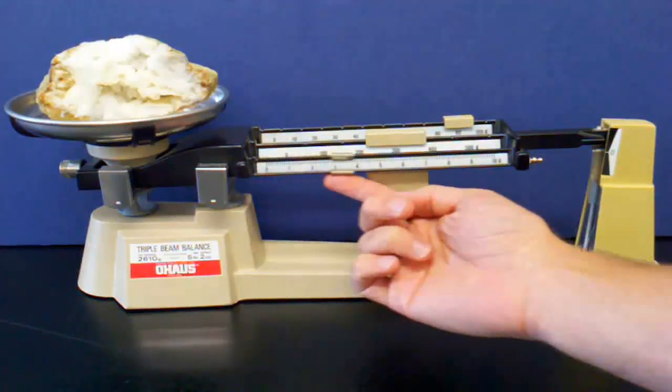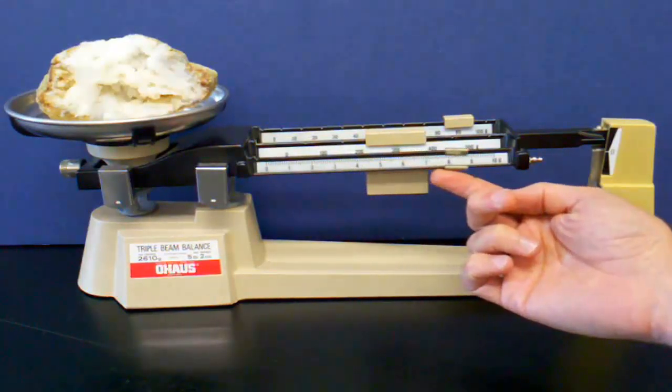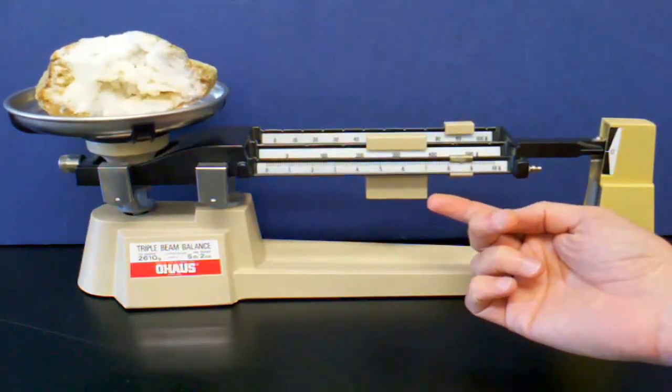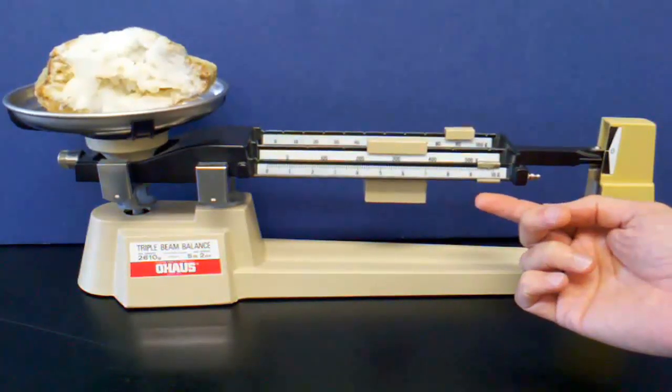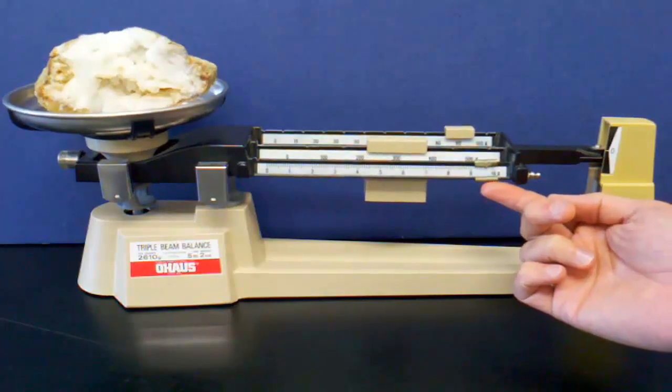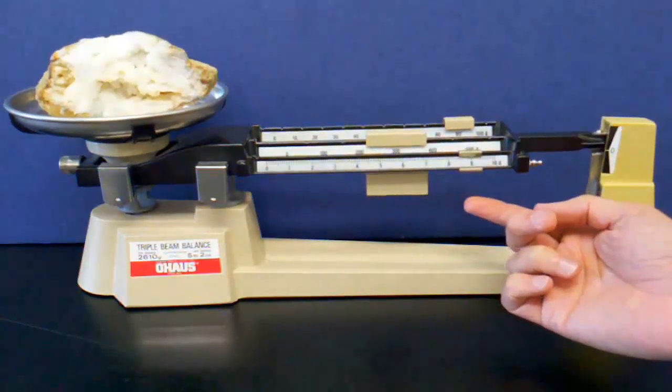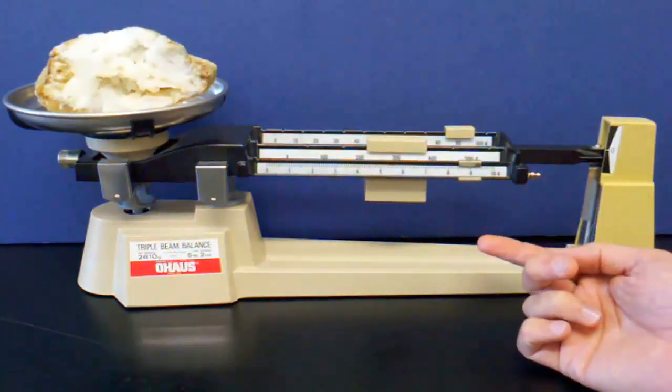Lastly, I'll do the same with the 1-gram slide. This is very delicate, and I slide it carefully along the rail. I may need to adjust it back and forth until the balance will point to the zero.